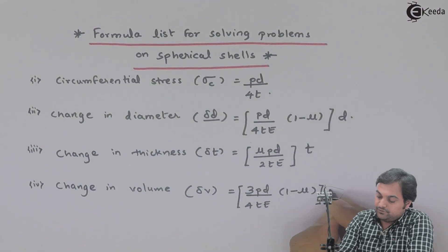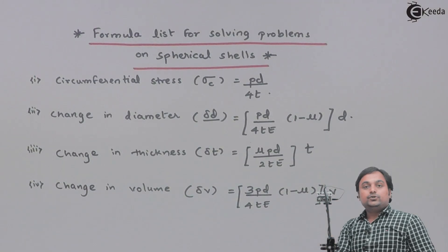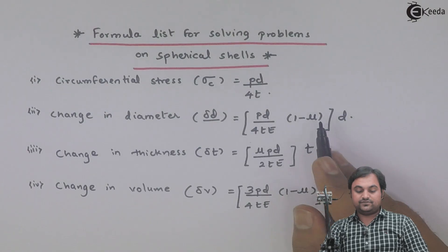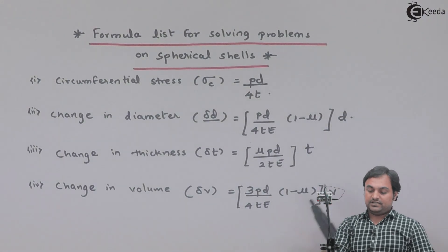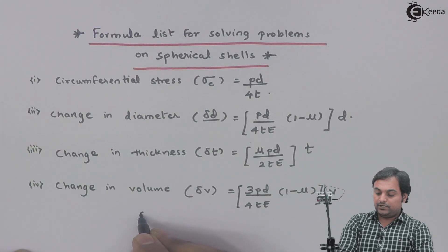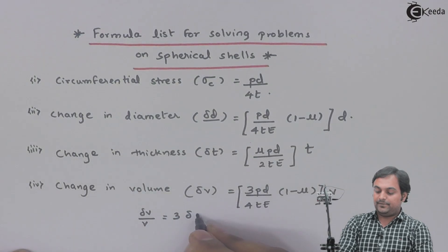So here is the formula list which we have to remember. Apart from this, there is one more formula: change in volume upon original volume, that is volumetric strain, is 3 times the strain in diameter.